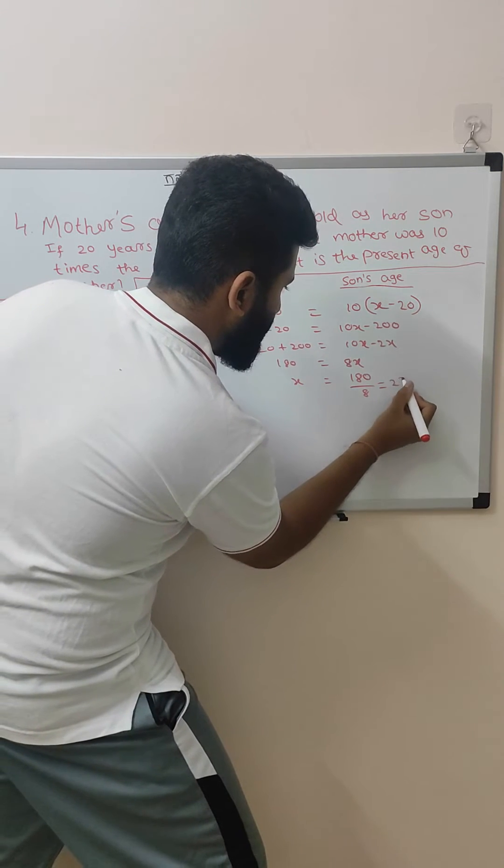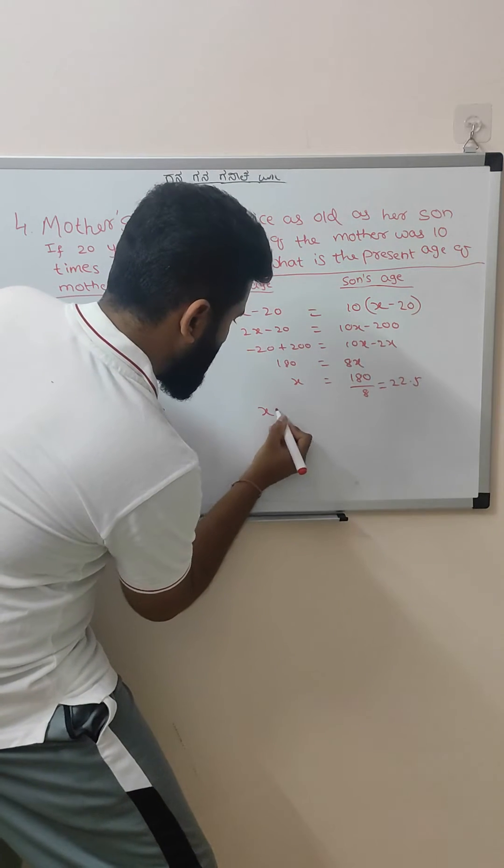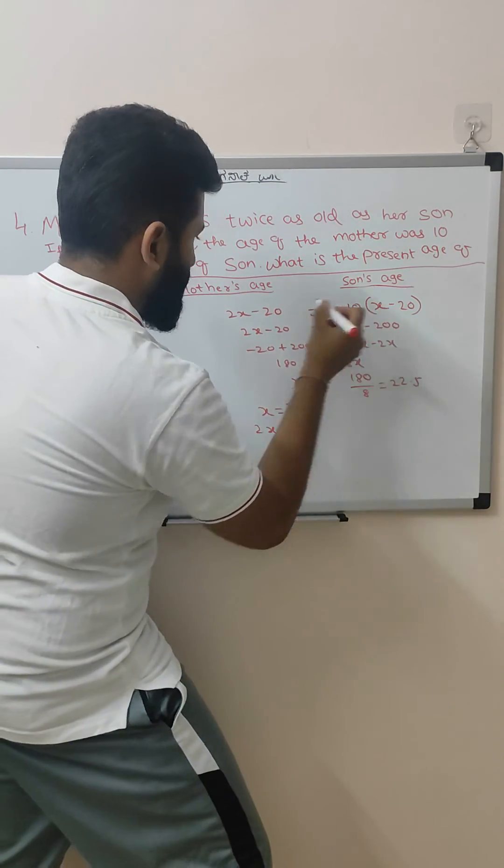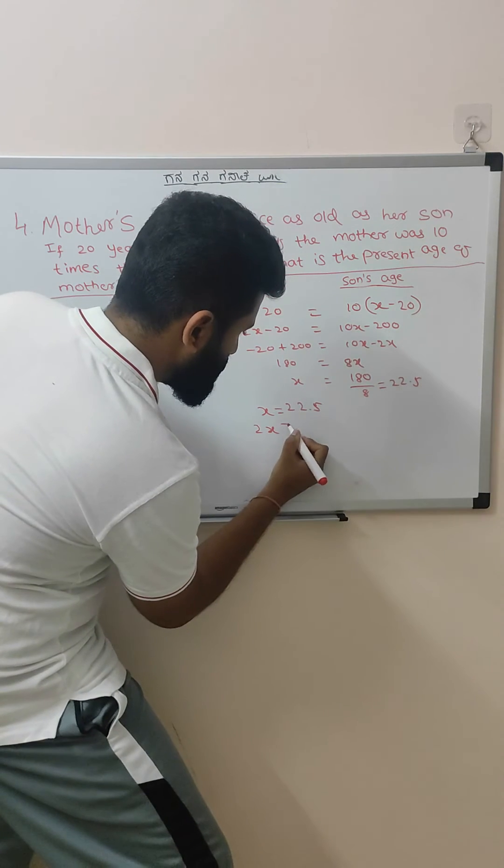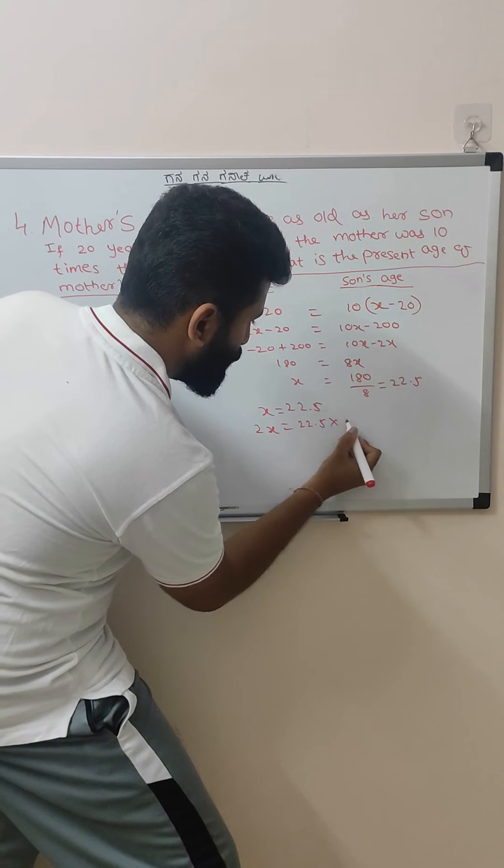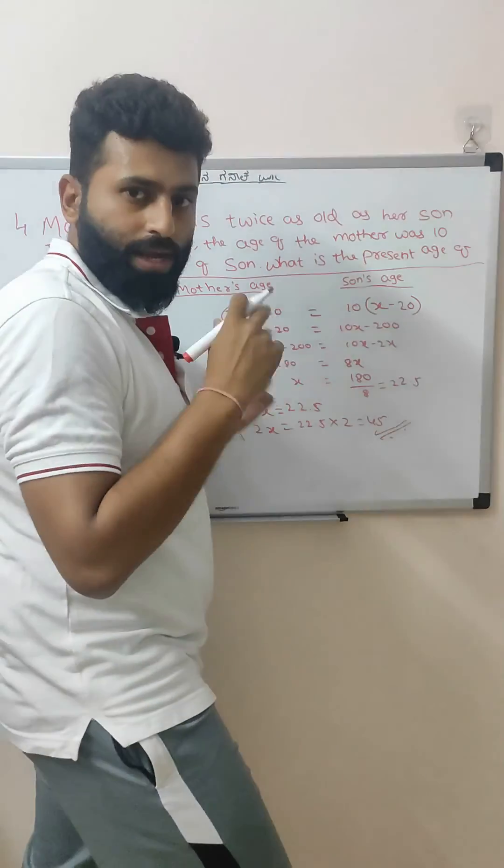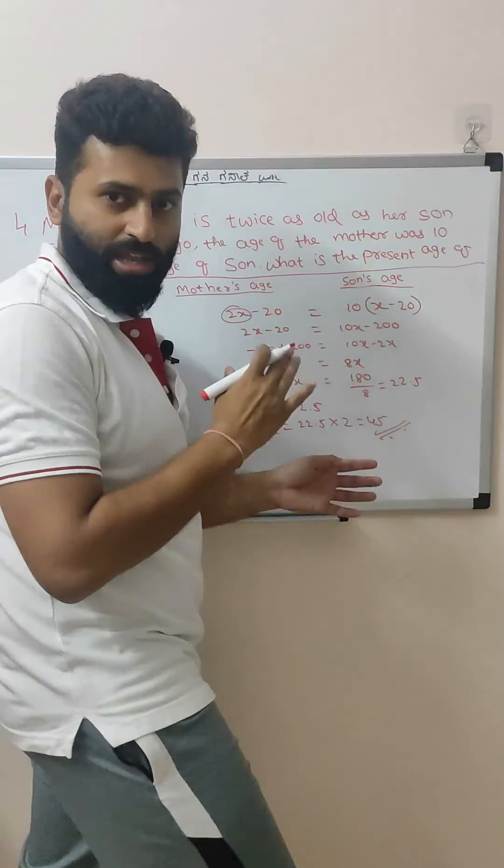That would be 22.5, so x age you got - that means son's age you got. So mother's age would be 2x, right? Mother's age would be 2x, so 22.5 into 2, that would be 45. So understanding the question in the right way and framing the equation is very important here.